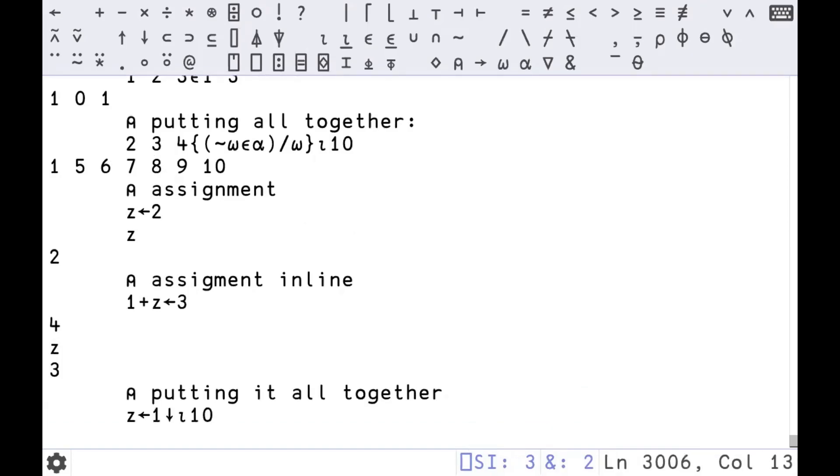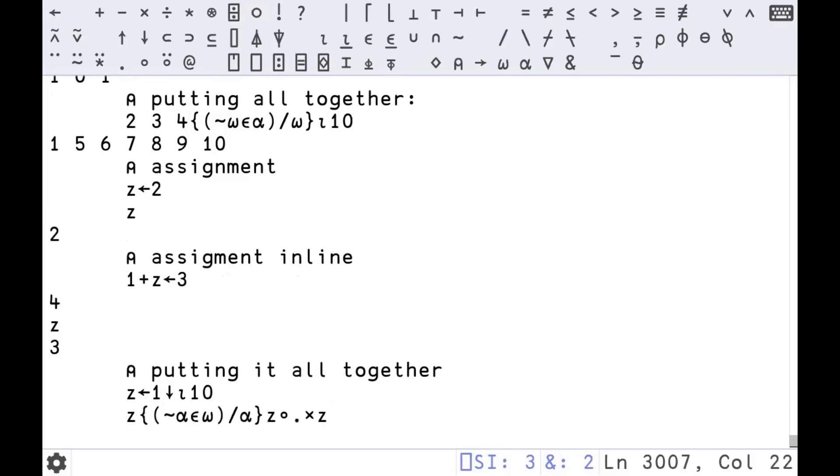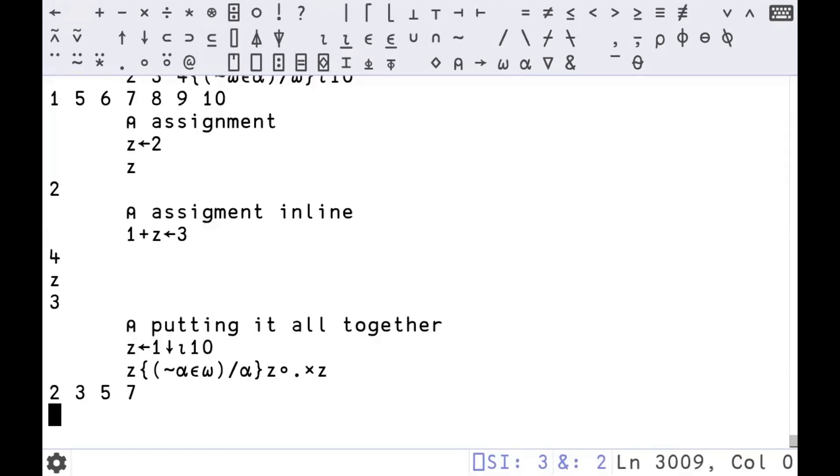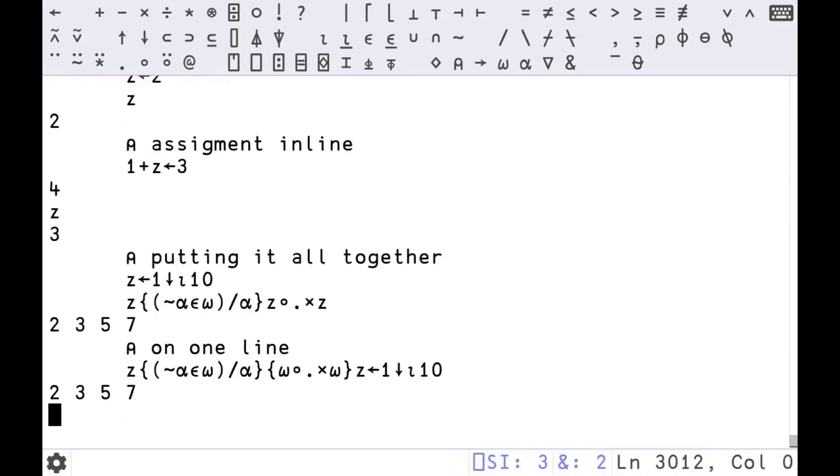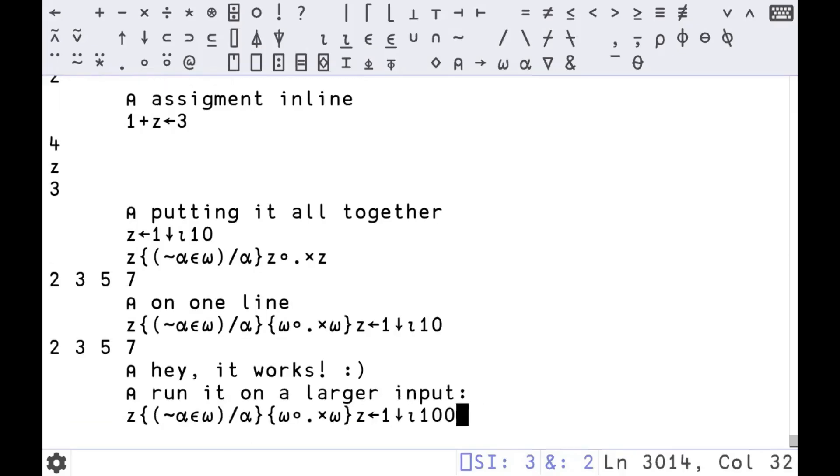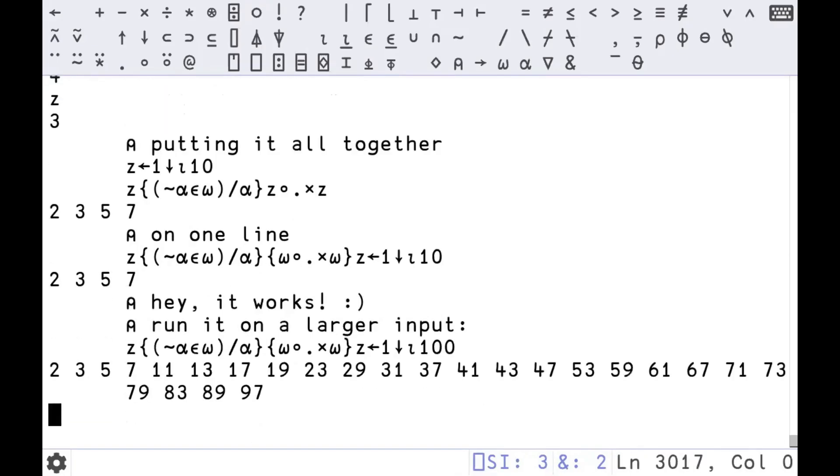Let's start putting it all together so we can actually generate some prime numbers. Z will be the numbers two through 10. Here we generate the times table, all the products of all the combinations of numbers two through 10. We are selecting from Z all of the numbers in Z that are not in the times table that we generated. So two through seven, those are the prime numbers. We can put it all on one line, we can start to make things a little terser. And it actually works. If we make it run on 100, it still works.